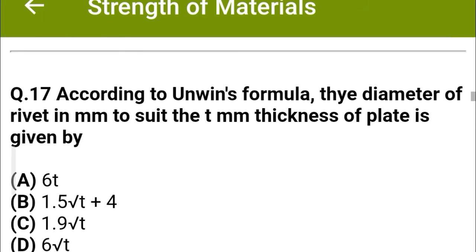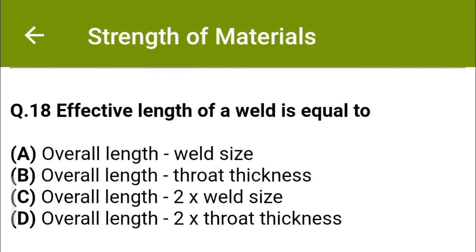Next question: According to Unwin's formula, the diameter of a rivet in mm to suit t mm thickness of the plate is given by — option A: 6√t, option B: 1.5√t + 4, option C: 1.9√t, option D: 6√t. The correct answer is option D: 6√t.